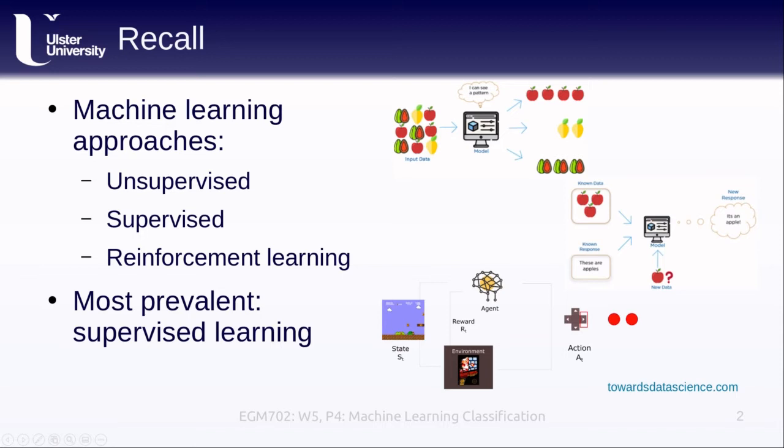Of these, at least in the realm of remote sensing, the most prevalent type of machine learning used is supervised machine learning, and that is what we will cover in the rest of this lesson.